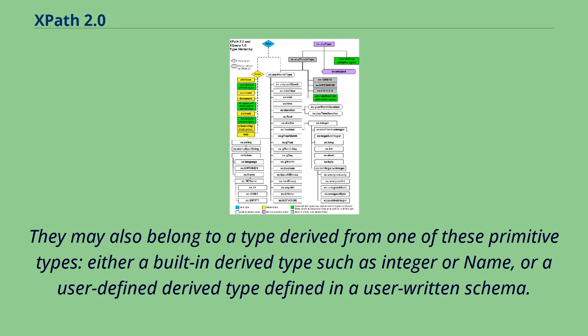Atomic values may belong to any of the 19 primitive types defined in the XML schema specification. They may also belong to a type derived from one of these primitive types, either a built-in derived type such as integer or name, or a user-defined derived type defined in a user-written schema.